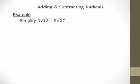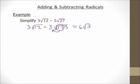Hi there, it's me, Mr. B. We're going to simplify 3 square root of 12 minus 5 square root of 27. In order to add and subtract radicals, I need to simplify each term. So let's simplify 3 square root of 12. That's going to be 3 times the square root of 2 times 2 times 3. My index is a 2, so I circle the two 2s and bring one out. So that's 6 square root of 3.